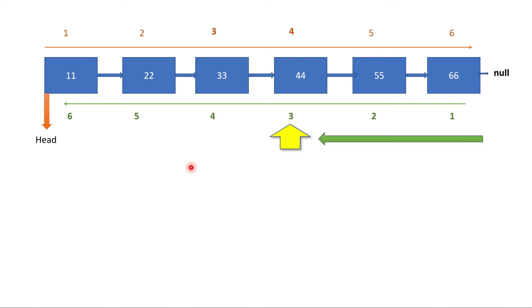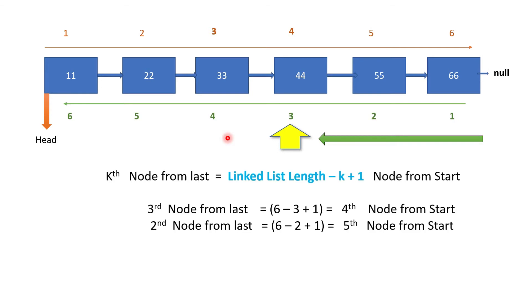We can derive a formula here. The length of the linked list is six. If we subtract k from the length and add one, we can find the position from the beginning. The kth node from last is actually the (length minus k plus one) node from start. For example, the third node from last is six minus three plus one equals four — the fourth node from start. The second node from last is six minus two plus one equals five — the fifth node from start.